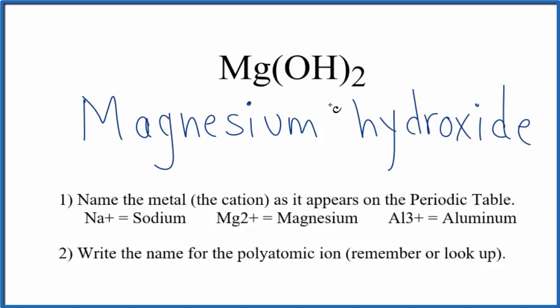If you're given the name and need to write the formula, you need to recognize that magnesium is in group 2 on the periodic table. It has a 2+ ionic charge. And then this whole hydroxide, that's always 1-. So we need 2 hydroxide ions here to get a 2- to balance the 2+ out. Have a net charge of 0.